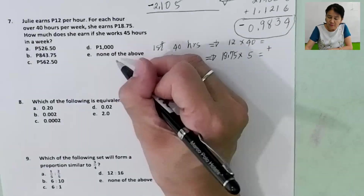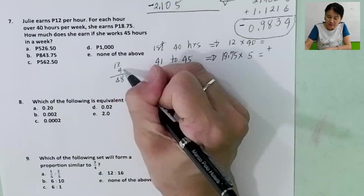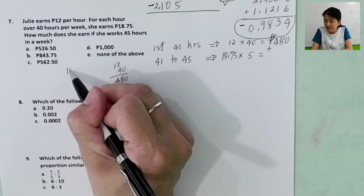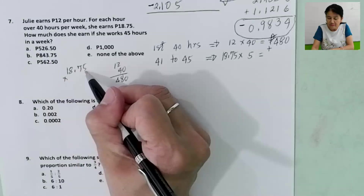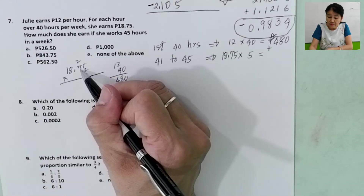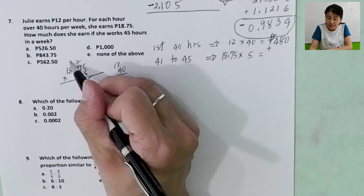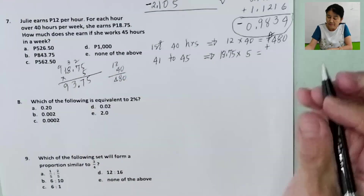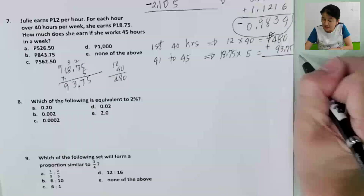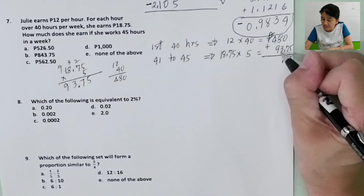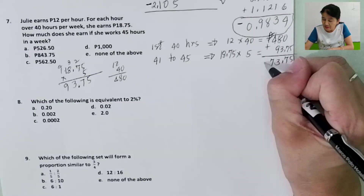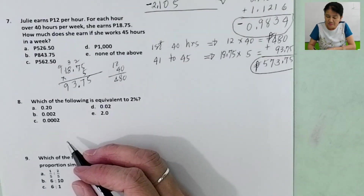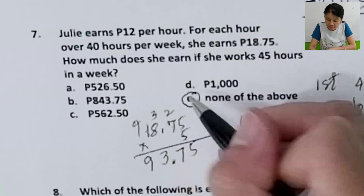12 times 40: 12 times 4 is 48, add a zero, giving 480 pesos. Then 18.75 times 5: 5 times 5 is 25, carry 2; 5 times 7 is 35 plus 2 is 37, carry 3; 5 times 8 is 40 plus 3 is 43, carry 4; 5 times 1 is 5 plus 4 is 9 — giving 93.75. Add 480 plus 93.75 to get 573.75. That answer is not among the choices, so you encircle letter E.